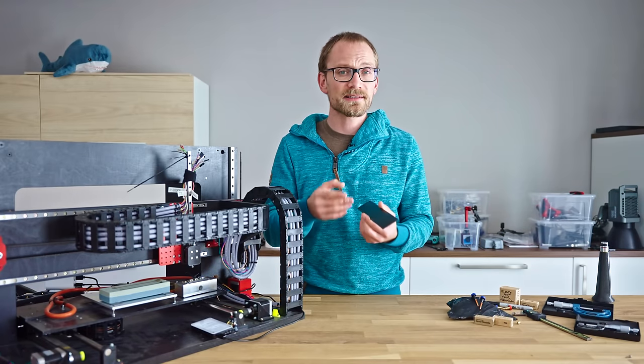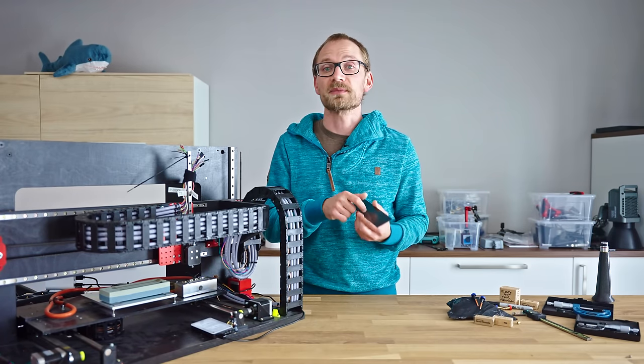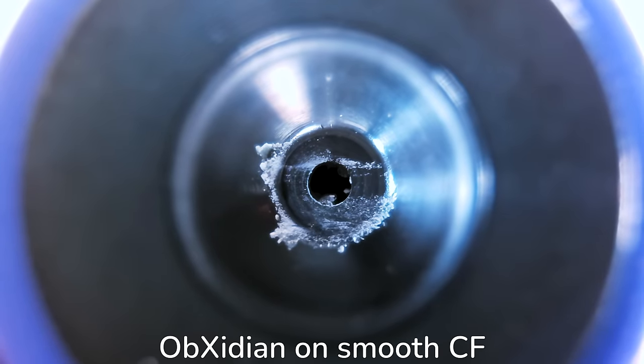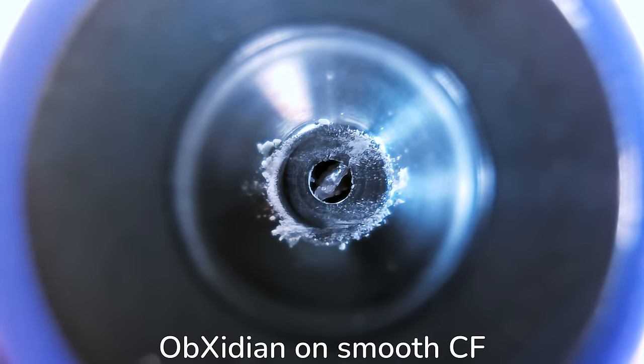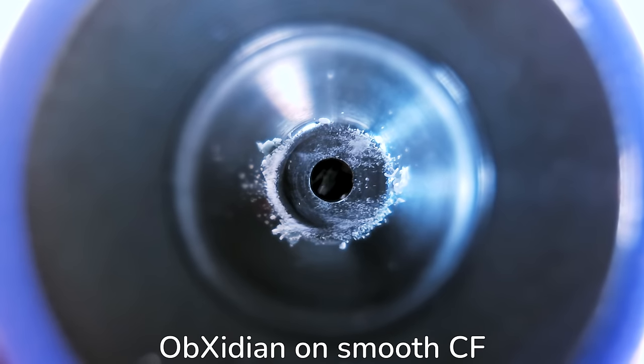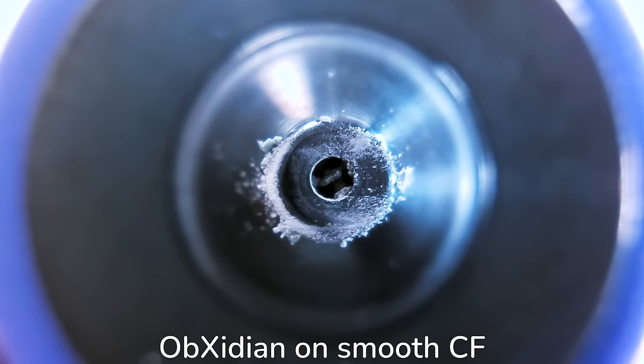For now, it does not look like this carbon fiber sheet made any sort of an impact to the brass, hardened, or Obxidian nozzles, even though carbon fiber is supposed to be one of the more abrasive materials these nozzles typically touch. And I think that's because the nozzles aren't actually making contact with the fibers themselves, they're just making contact with the resin impregnation in the carbon fiber composite sheet. You can see the shavings and the flakes are white or clear and not black like the carbon fibers themselves. I could let these tests run until one of the nozzles finally breaks through the resin layer, or I could slightly help it along.